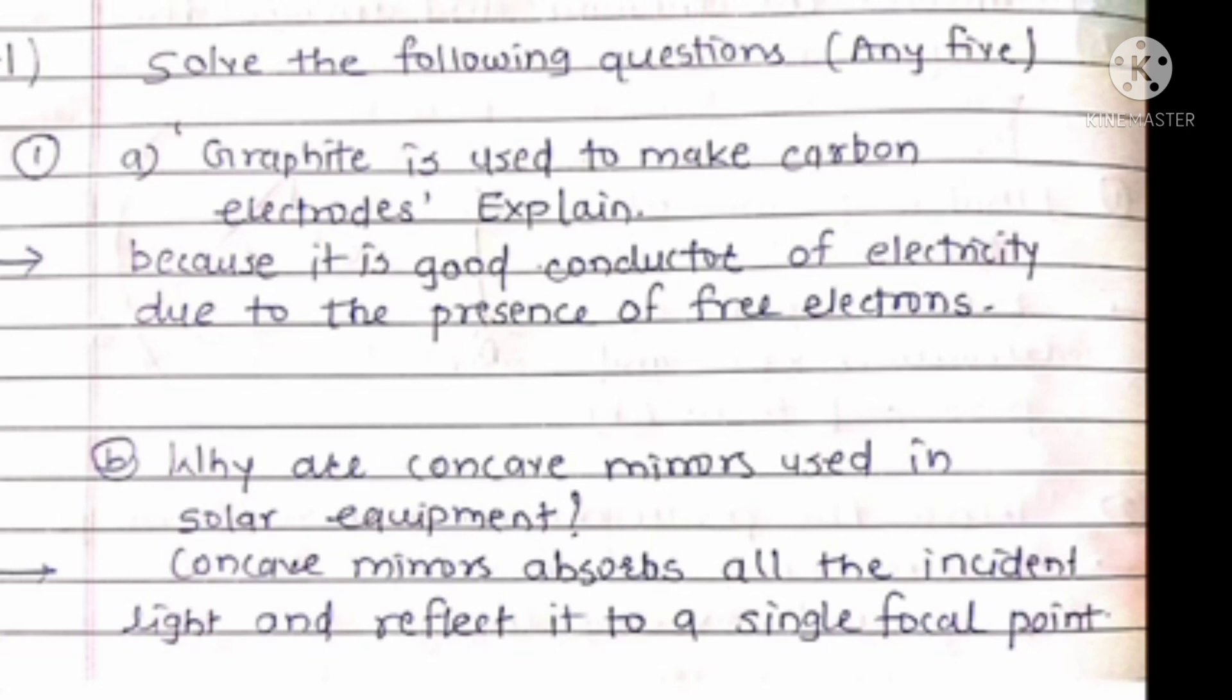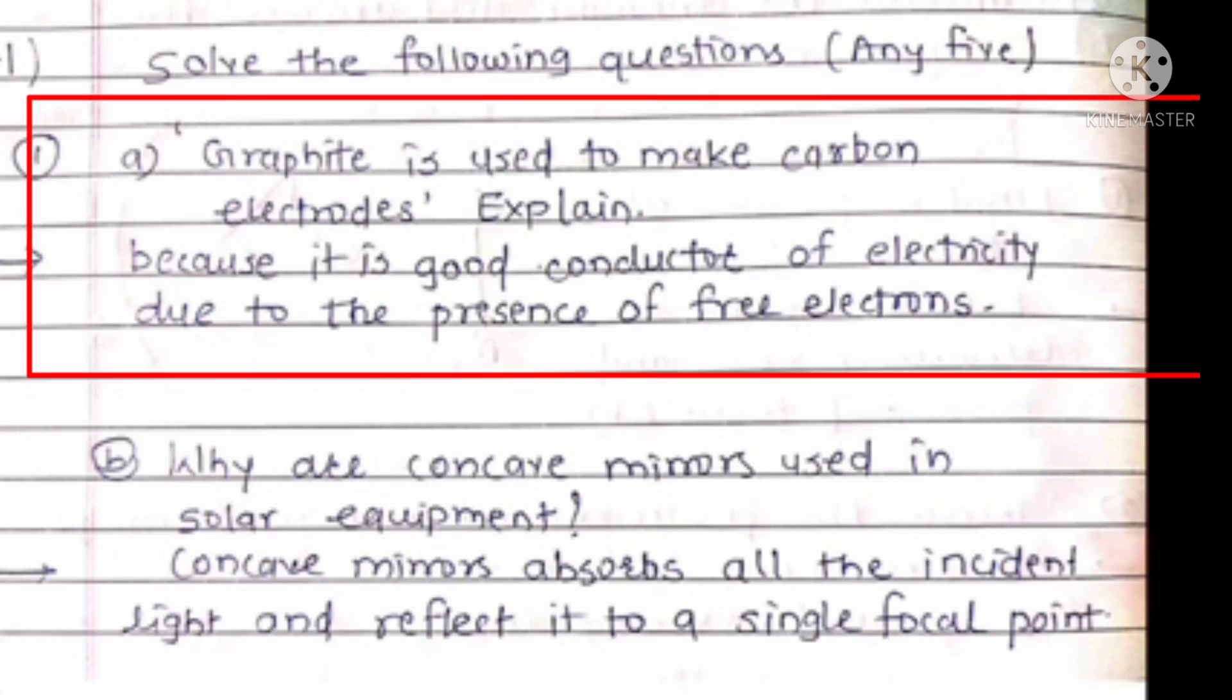Solve the following questions, any five. First: Graphite is used to make carbon electrodes. Explain. Answer: Graphite is good conductor of electricity due to the presence of free electrons.